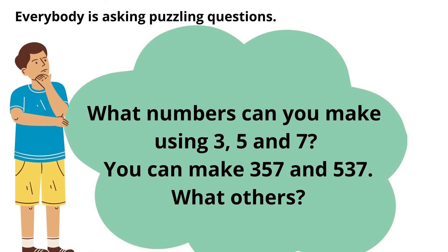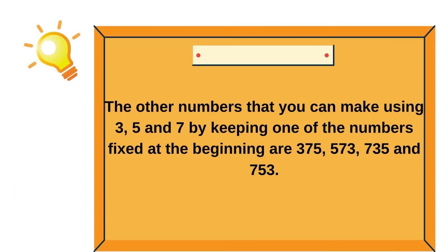What numbers can you make using 3, 5 and 7? You can make 357 and 537. The other numbers that you can make using 3, 5 and 7 by keeping one of the numbers fixed at the beginning are 375, 573, 735 and 753.